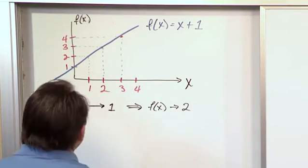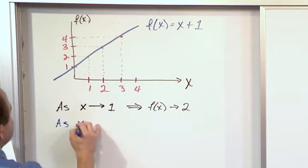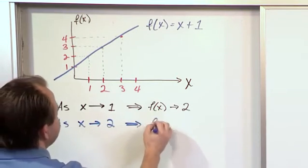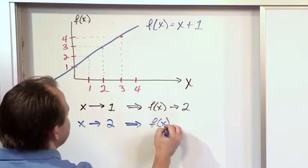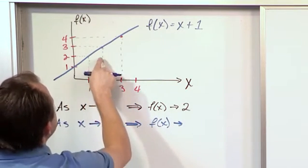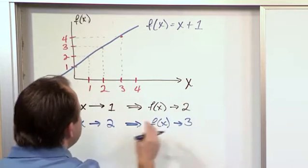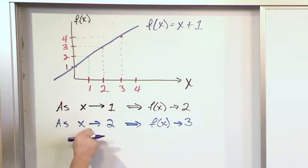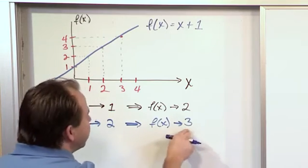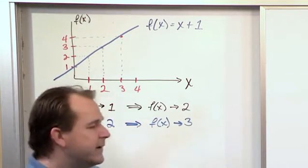You can do this for any point x. As x approaches the number 2, f(x) approaches what? As we get closer and closer to 2, the function approaches 3. We're never quite getting to 2 — we just get infinitely close, and as we do that, the function gets infinitely close to 3.